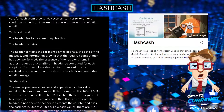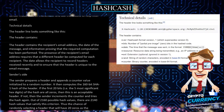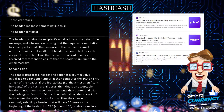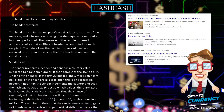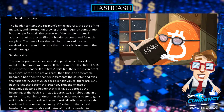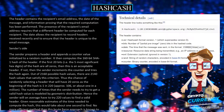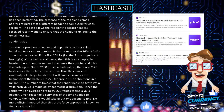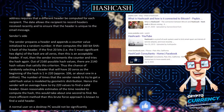The sender prepares a header and appends a counter value initialized to a random number. It then computes the 160-bit SHA1 hash of the header. If the first 20 bits, i.e. the five most significant hex digits, of the hash are all zeros, then this is an acceptable header. If not, the sender increments the counter and tries the hash again. Out of 2^160 possible hash values, there are 2^140 hash values that satisfy this criterion, giving a chance of approximately 1 in 2^20.